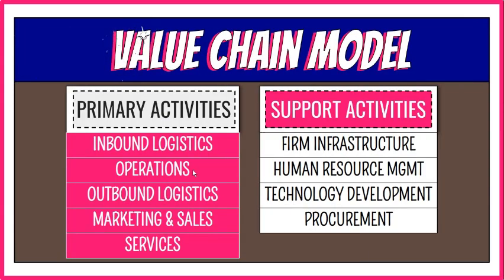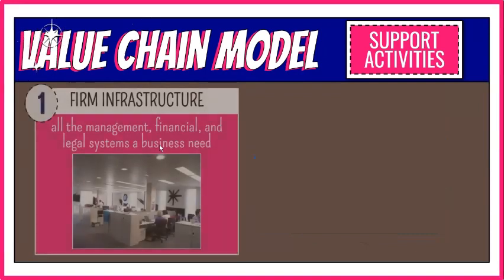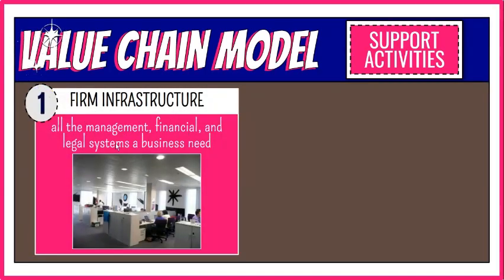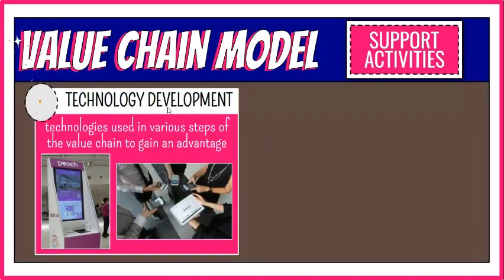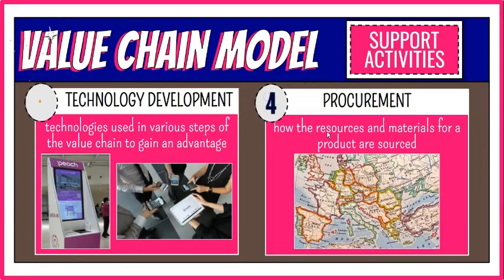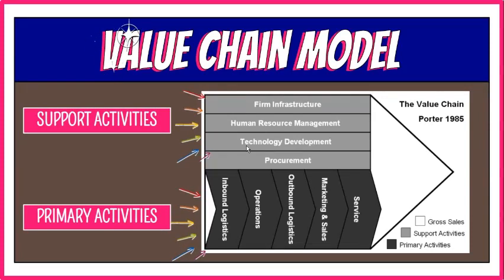In order to help streamline the five primary steps, Porter says the value chain also requires a series of support activities. The four support activities are: first, firm infrastructure, which entails all the management, financial, and legal systems a business has in place to make decisions and effectively manage resources; second, human resource management, which encompasses all the processes and systems involved in managing employees and hiring new staff; third, technology development, which helps a business innovate and can increase efficiency or decrease production costs; and fourth, procurement, which involves how the resources and materials for a product are sourced and suppliers are found, with the goal of finding quality supplies that fit the business budget. Maximizing the activities in any one of these steps allows a company to have a competitive advantage over competitors in its industry.